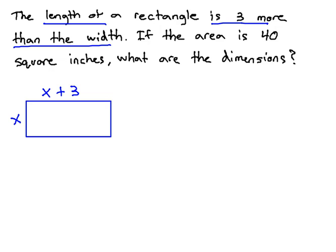And the way we calculate area is we multiply width times length. So, if we multiply x times x plus three, that's going to equal the area of the rectangle, and we're told that the area is forty.